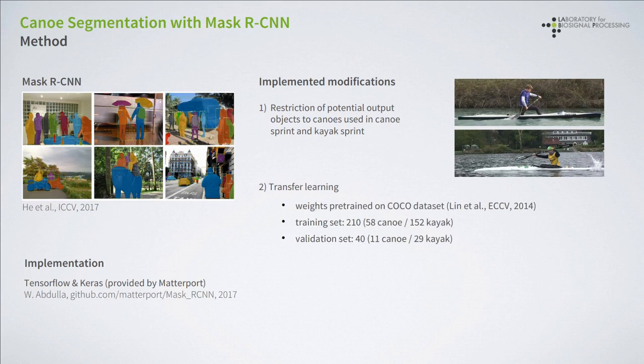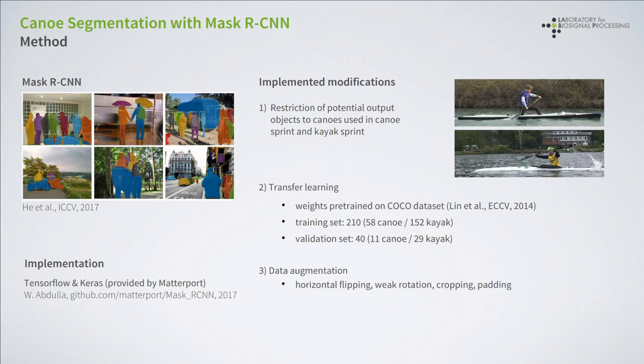Second, we trained our network by means of transfer learning. We used the weights pre-trained on the COCO dataset, and we constructed a training set and a validation set from a total number of 66 video sequences. The training set consisted of 58 canoe and 152 kayak images, and the validation set consisted of 11 canoe and 29 kayak images. We also applied some processing steps for data augmentation, for instance horizontal flipping, rotation of the image, some cropping, and also some padding.